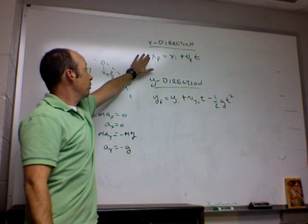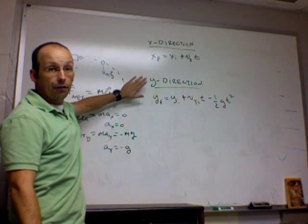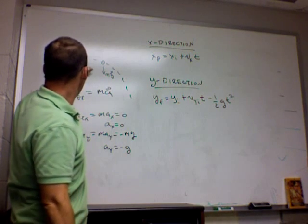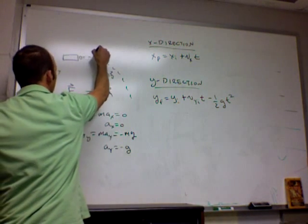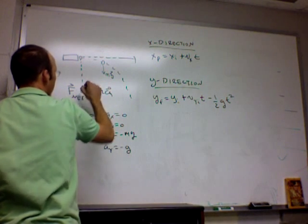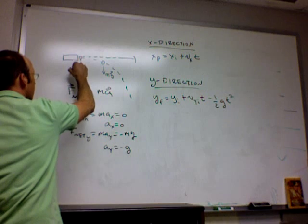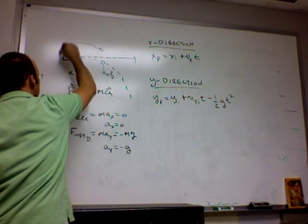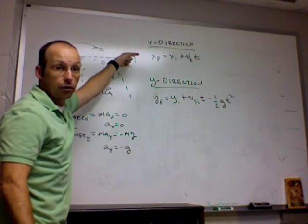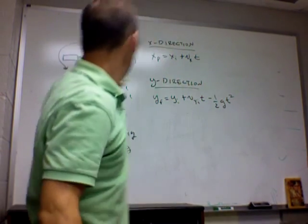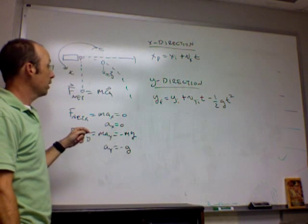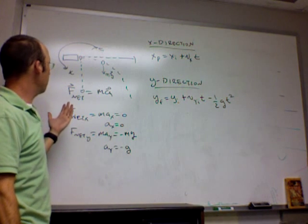The key is, this motion is independent of this motion, except for the time it takes. So this is just like a ball moving at a constant speed, and a ball falling straight down. And the only thing they have in common is the time. The time it takes for this constant horizontal motion is equal to the time it takes a ball to fall straight down. So that's a simple case.